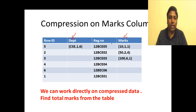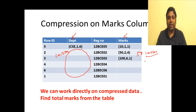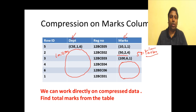By compressing data, we achieve storage savings. This example has only six rows, but consider a large table where 'CSE' repeats one million times, or 50 repeats one million times. In that case, we just store: value 50, starts at position 2, repeats one million times — saving an enormous amount of space. Compression is very effective, especially with columnar databases.